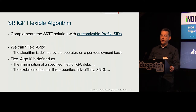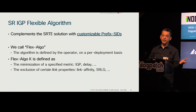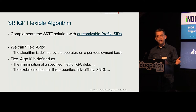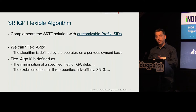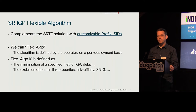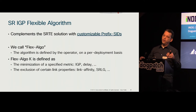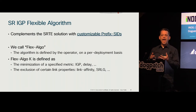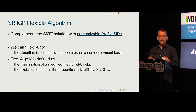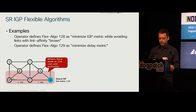For example, you can ask the router to minimize on IGP metric — that's nothing new. You can ask it to minimize delay to the destination. You can also tell ISIS to include or exclude properties of links, like admin groups, affinities, or SRLGs. So now the ISIS or OSPF computation caters to your needs — these are what I call your macro traffic engineering needs, and you'll see that in the use cases.